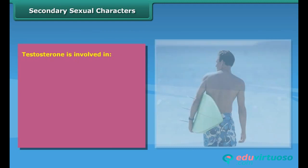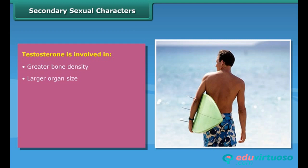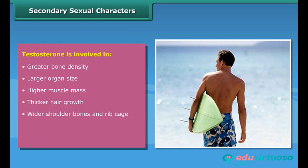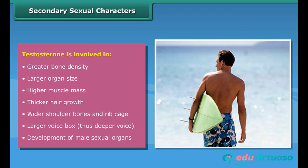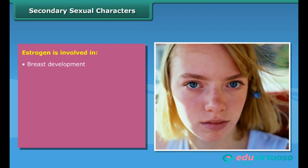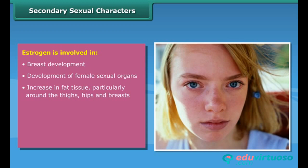Testosterone is involved in greater bone density, larger organ size, higher muscle mass, thicker hair growth, wider shoulder bones and rib cage, a larger voice box and thus deeper voice, and the development of male sexual organs. Estrogen is involved in breast development, development of female sexual organs, and increased fat tissue particularly around the thighs, hips, and breasts, along with reduced muscle mass and wider pelvic bone.